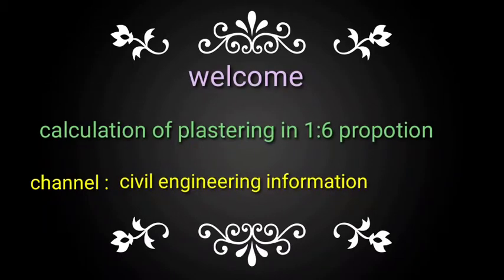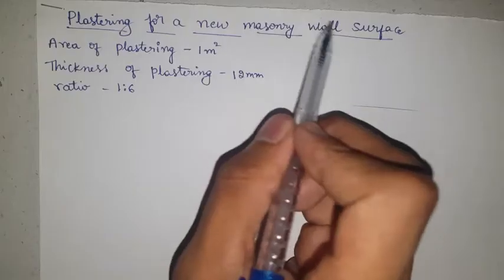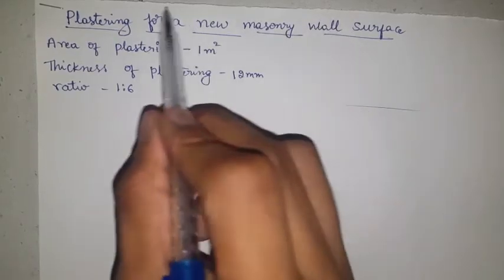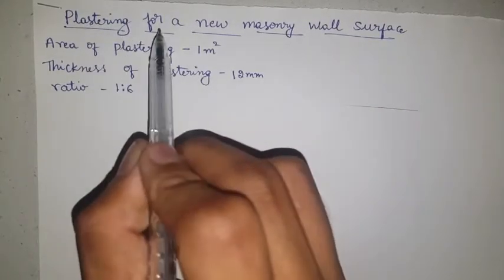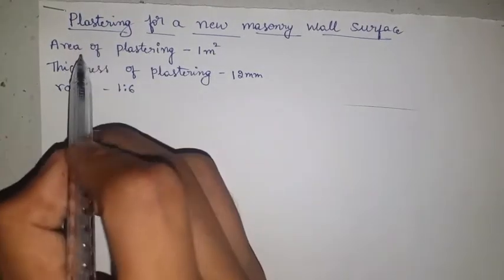Hi friends, welcome to my channel Civil Engineering Information. This topic is calculation of plastering work — area of plastering: one meter square, one meter into one meter, length into height.